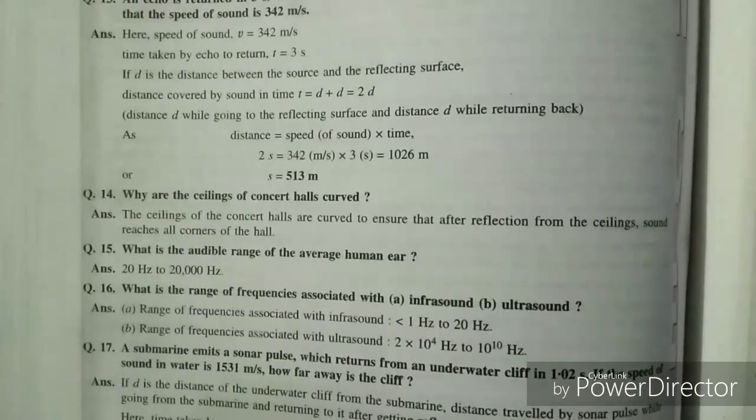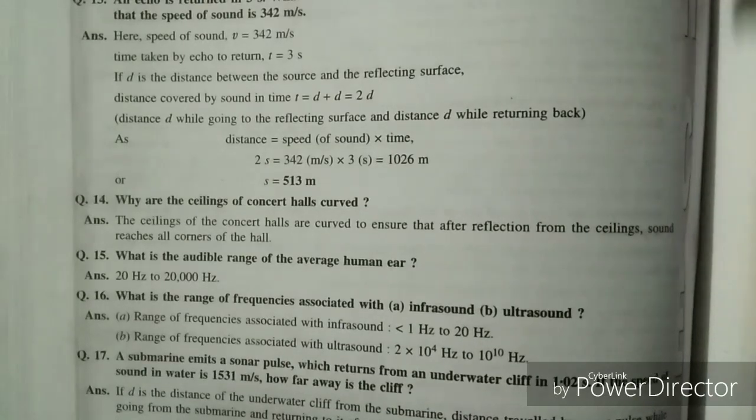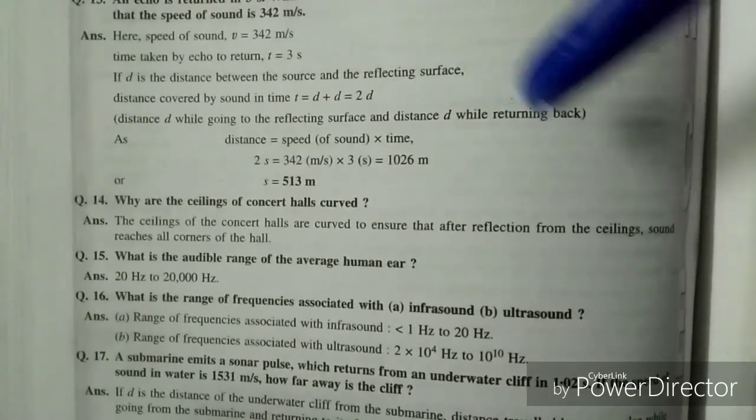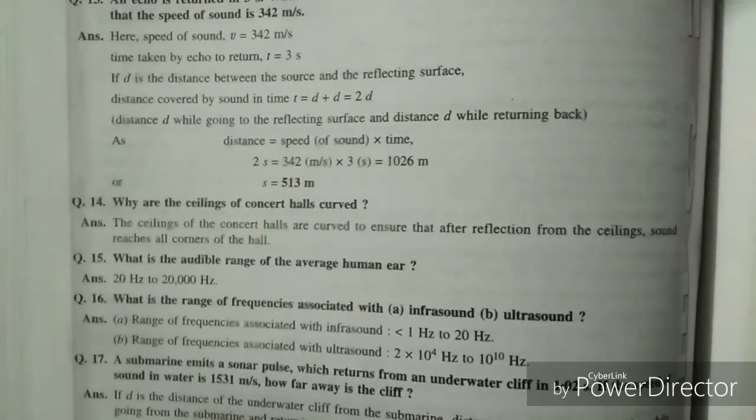Next up is what is the range of frequencies associated with infrasound and ultrasound. So with infrasound less than 1 hertz to 20 hertz and with ultrasound 2 into 10 raised to 4 hertz to 10 raised to 10 hertz.